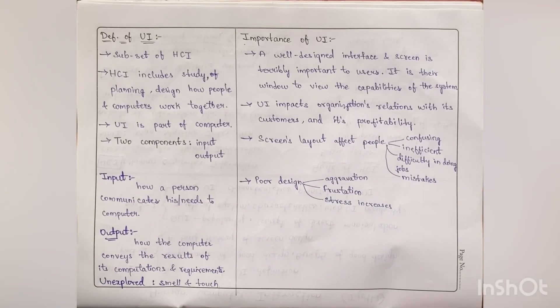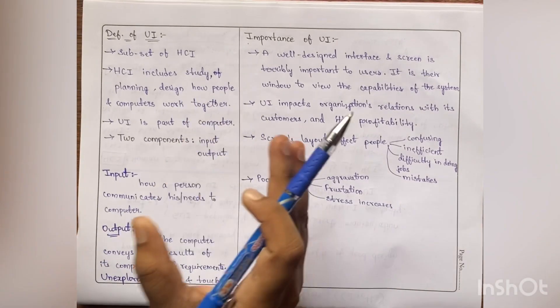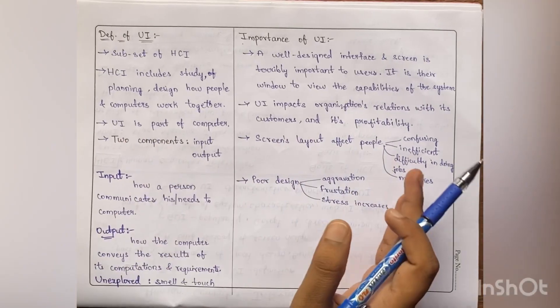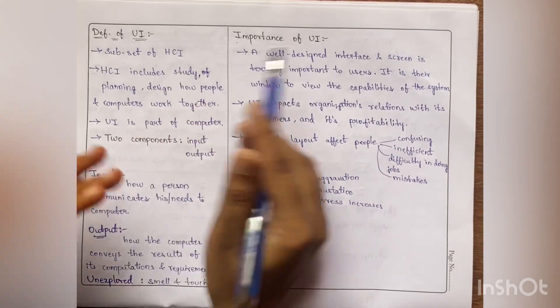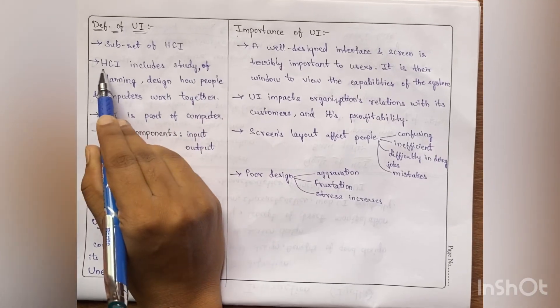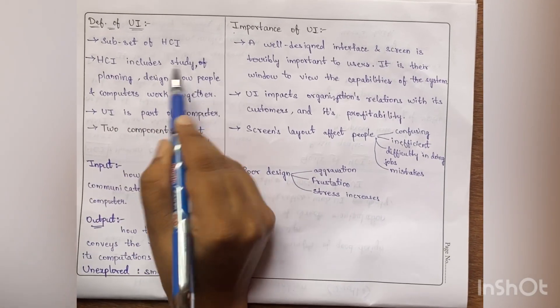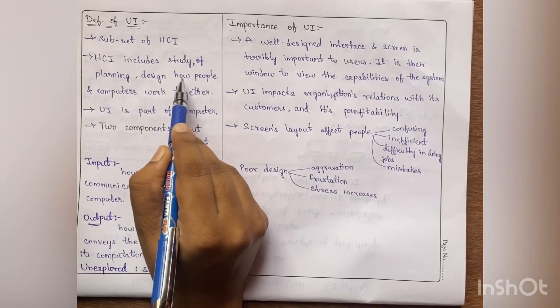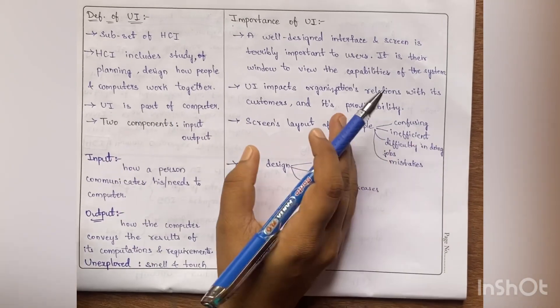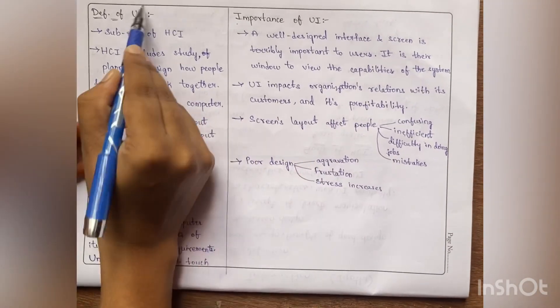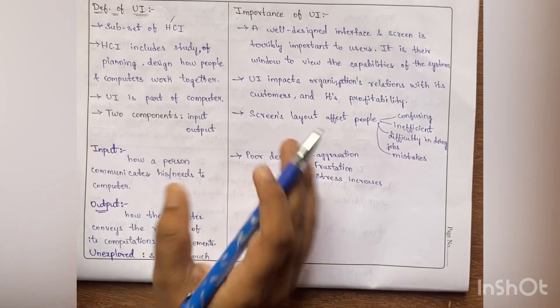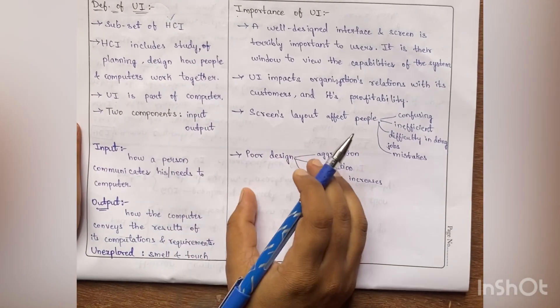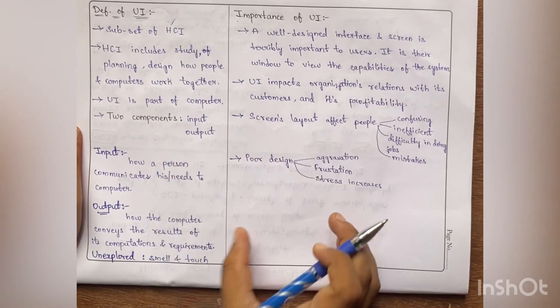Now coming to user interface. As I said, HCI is the study of interaction between people and the computing systems. Now user interface is the subset of this HCI. This HCI is including the study of planning, designing, how people and computers are working together. And this user interface is the subset of this HCI. It is the part of computer. Now this user interface has two components: input and output.